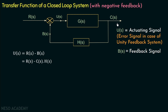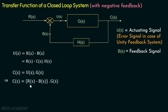If we observe the forward path of the system, CS is the multiplication of GS and the input US, so we can write CS equal to US multiplied with GS. Now we will replace US with the previous equation, so we have CS equal to RS minus BS multiplied with GS. And since BS equals CS multiplied with HS, we have CS equal to RS minus CS multiplied with HS, all multiplied by GS.